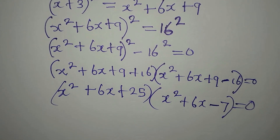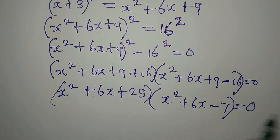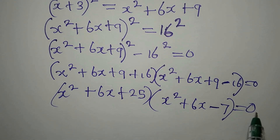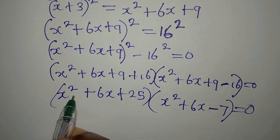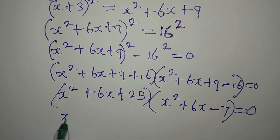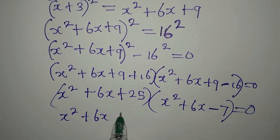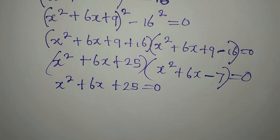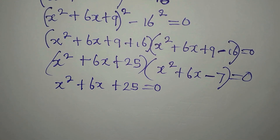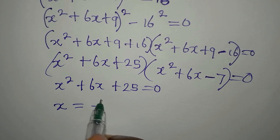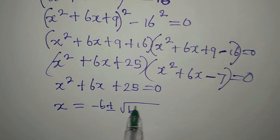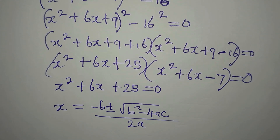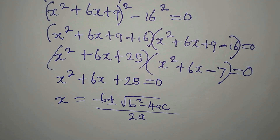Now we have two factors whose product is zero, so either factor can equal zero. We equate the first factor to zero: x² + 6x + 25 = 0. We can use the quadratic general formula: x = (−b ± √(b² − 4ac)) / 2a.